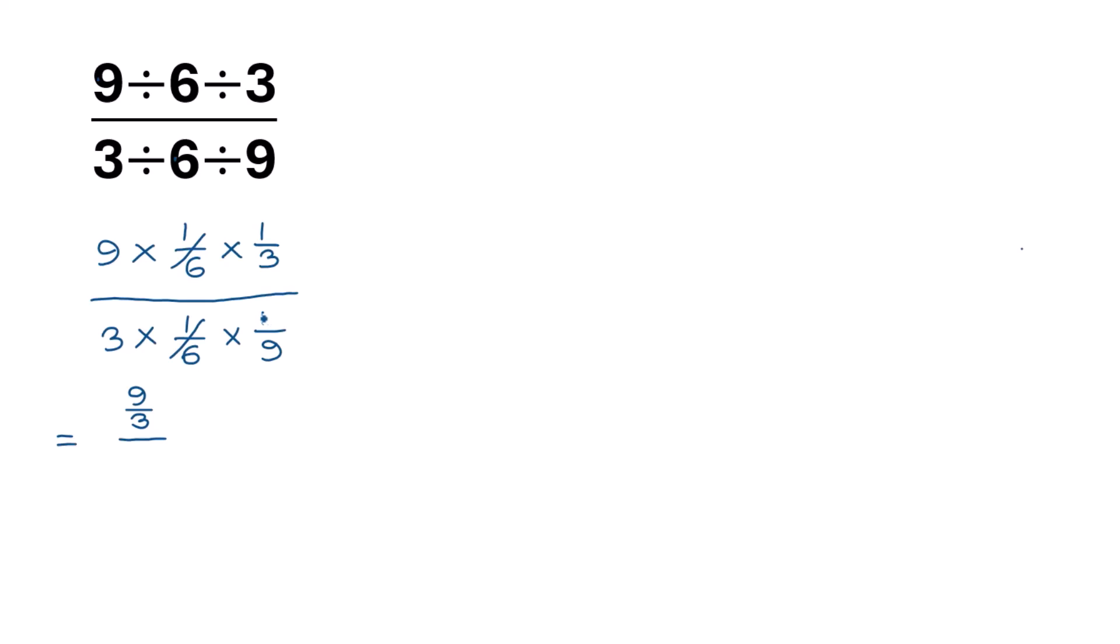Times this 1 over 9, so it will be 3 over 9. And simplifying, this 9 divided by 3 is 3, and this 3 divided by 9, simplifying this, it will be 1 over 3.